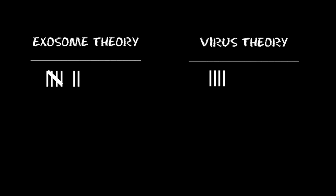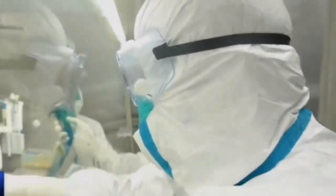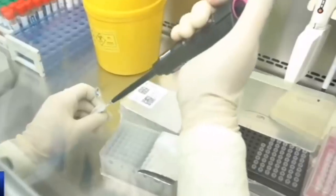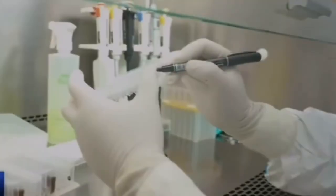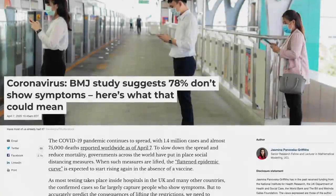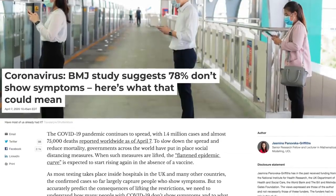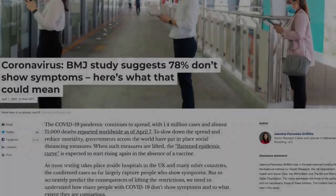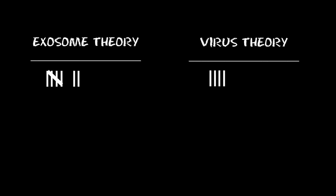What about the high levels of people testing positive who don't get sick? In fact, 80% of people testing positive are either asymptomatic or have slight cold symptoms. Why? This would make sense in exosome theory since the RNA fragments are not the cause of the illness, but it would not make sense for virus theory where this virus is supposed to cause the illness.